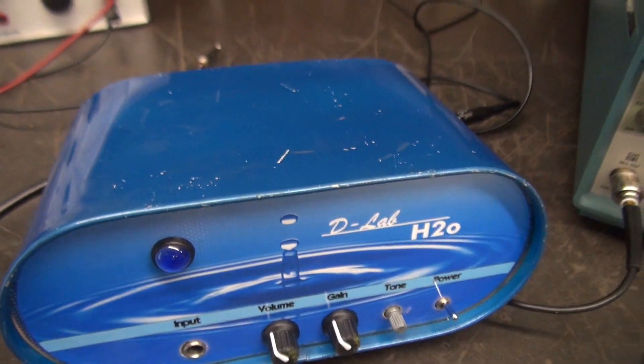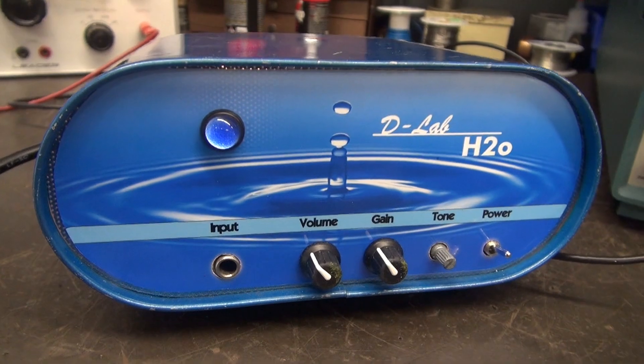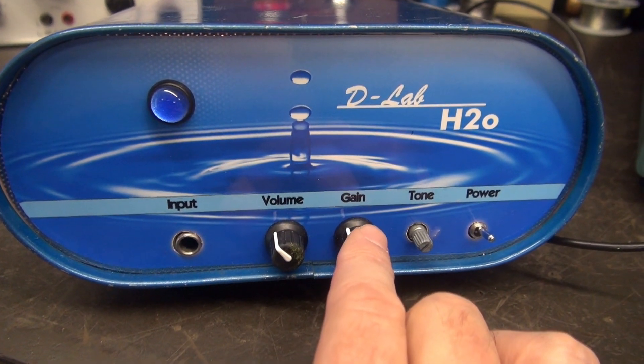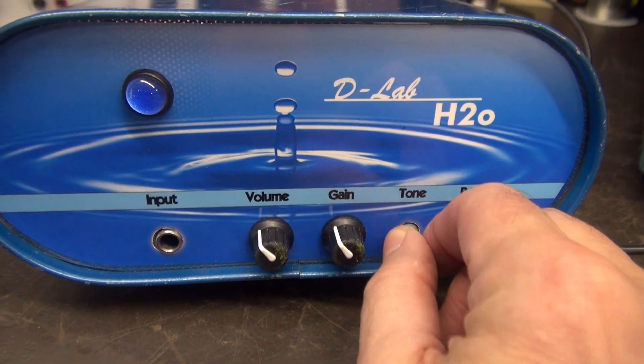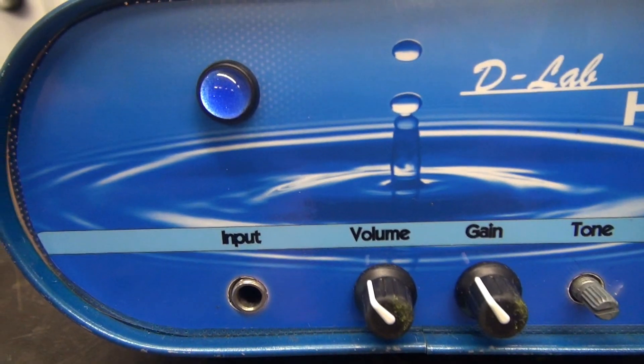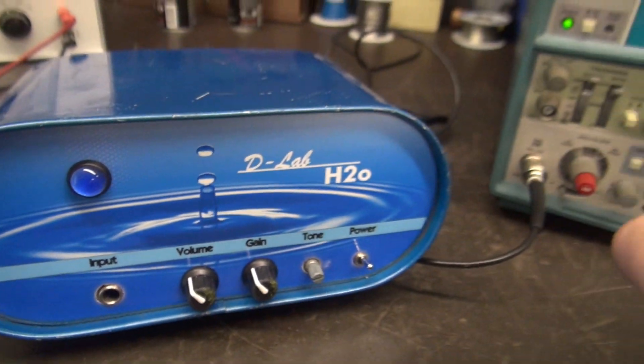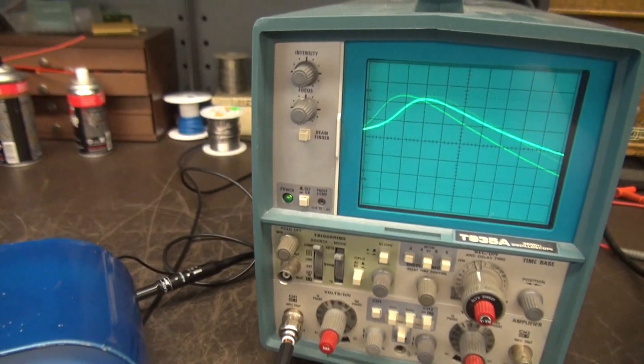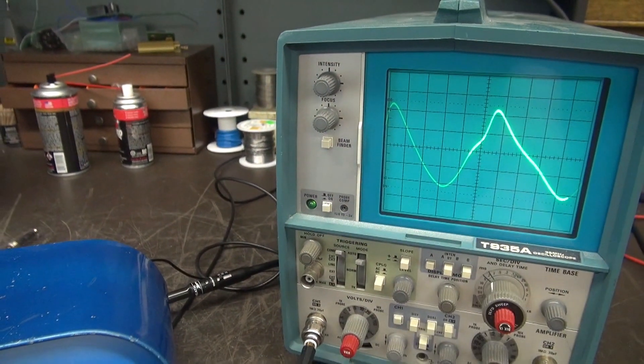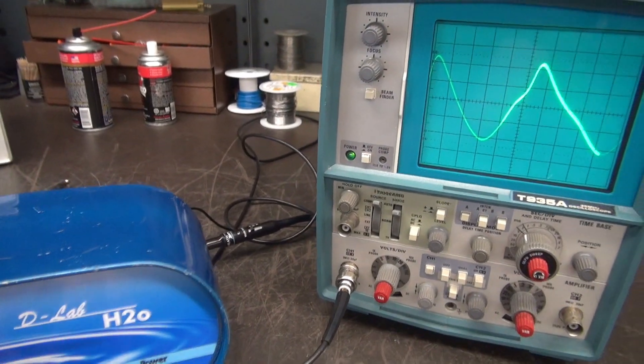Well, here's a close-up of the H2O. You can see she has a little bit of battle damage, but all in all she survived pretty well. So here's your input, volume, gain, tone, and she's missing the knob. Hopefully I can find one. So she's powered up, got the scope hooked up over here, and already I see an issue. See that? That ain't good. She's got some hum.